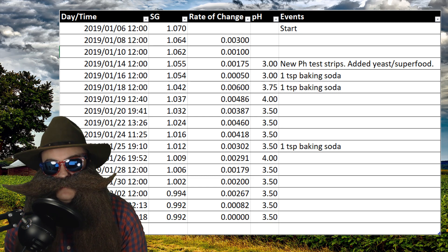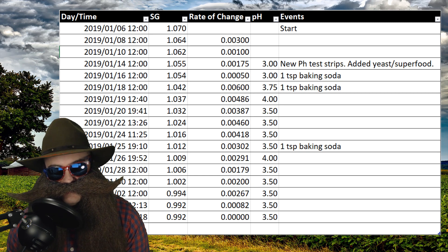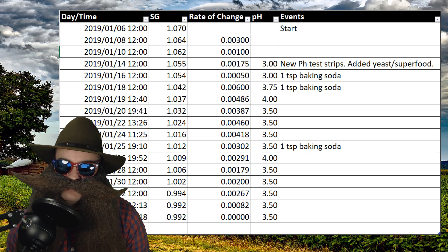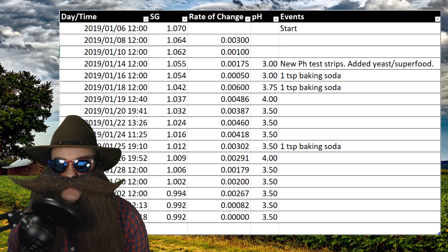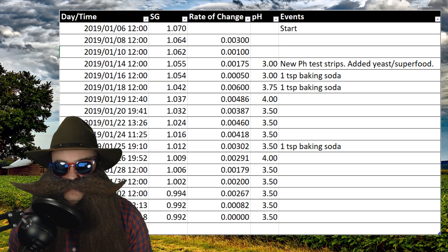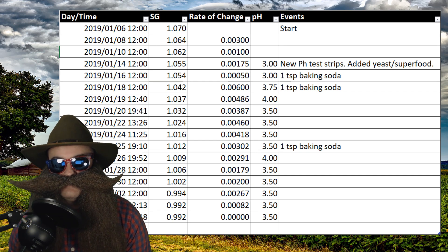In the first column we have the date. In the next column we have the specific gravity, and in the third column I took the derivative of the specific gravity readings to get the rate of change of specific gravity, and I like to think of that as the rate of sugar consumption.